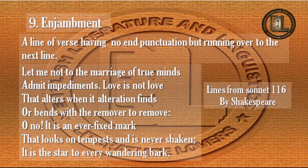The next term is enjambment. What is enjambment? A line of poetry having no end punctuation but running over to the next line to complete the sense. Look at these lines from Sonnet 116 by Shakespeare: 'Let me not to the marriage of true minds admit impediment. Love is not love that alters when it alteration finds, or bends with the remover to remove.'